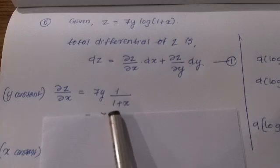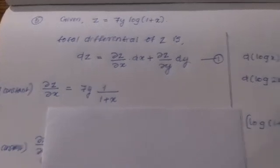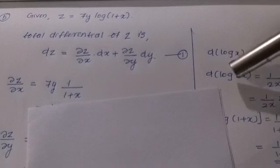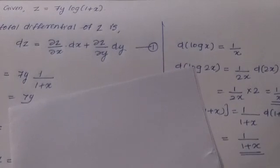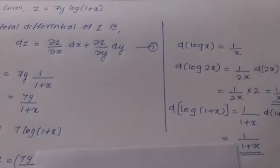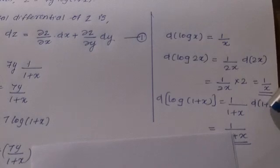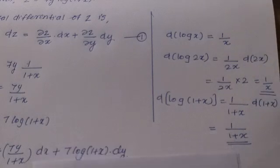So 7y is constant and we differentiate log(1 + x). The derivative of log(x) is 1/x. Applying the chain rule to log(1 + x): the derivative of (1 + x) is 1, since the derivative of 1 is 0 and the derivative of x is 1. So ∂z/∂x = 7y/(1 + x).